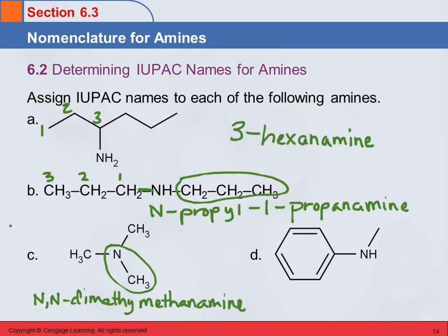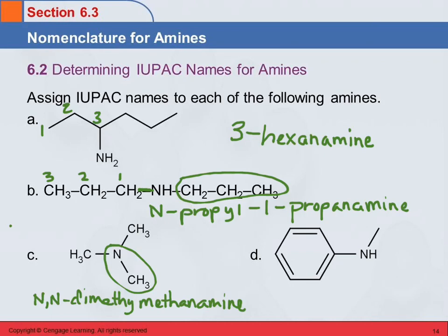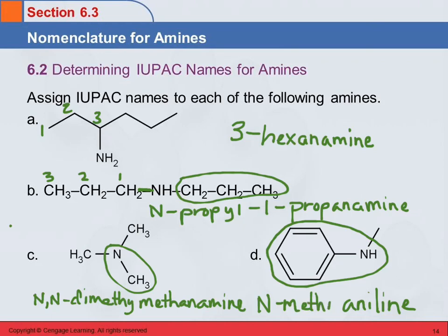Letter D: there are two groups — this is a secondary amine. We have a methyl group and a phenyl group. The phenyl group is bigger, but wait — this structure has a special name: aniline. So we call this aniline, and then there's a methyl group on the nitrogen: N-methyl-aniline.